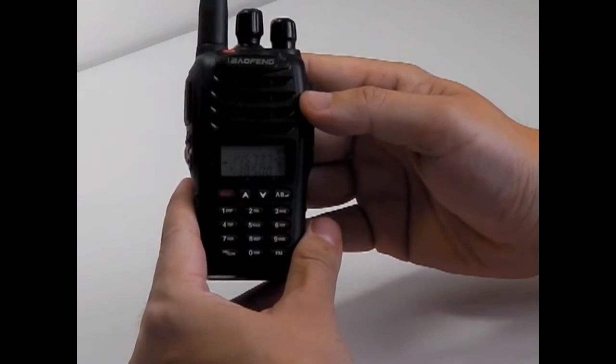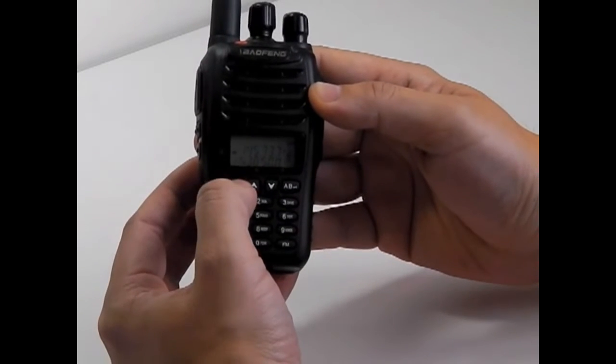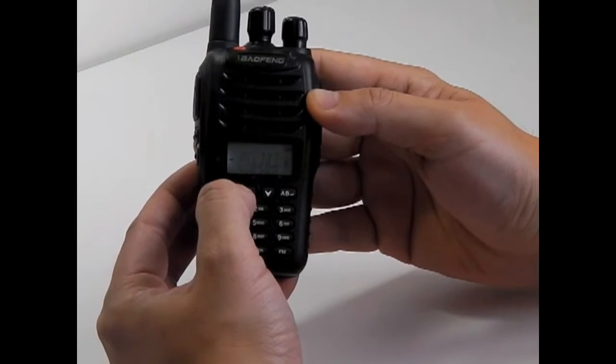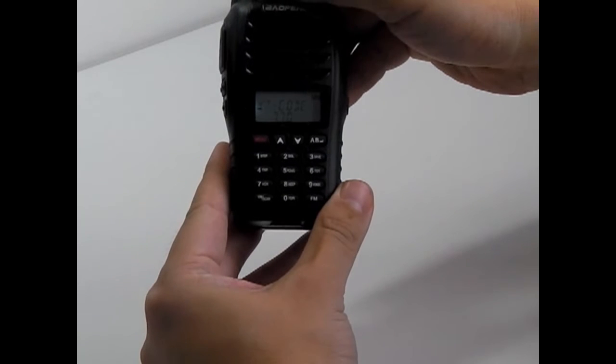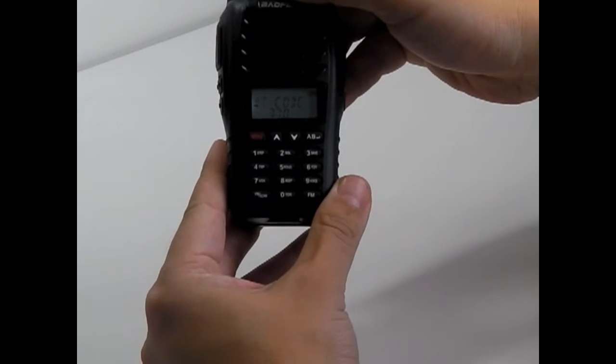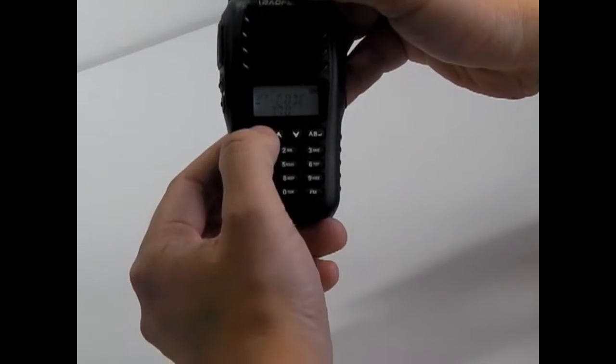The next three steps are all done within the menu option. Press the menu button. There are 29 menu options. The first thing we need to change is the CTCSS code, which is number 12 in the menu.